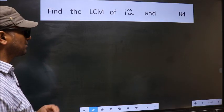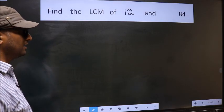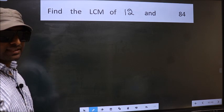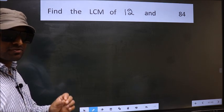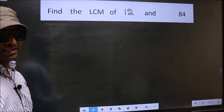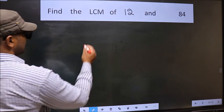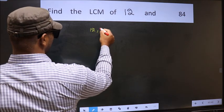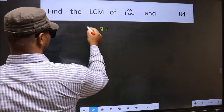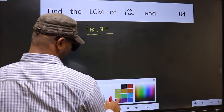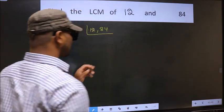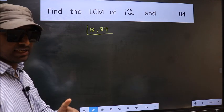Find the LCM of 12 and 84. To find the LCM, first we should frame it in this way. See, that is 12, 84. This is your step 1.